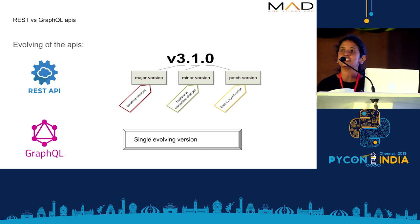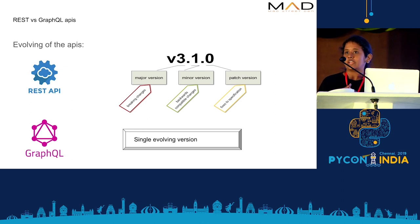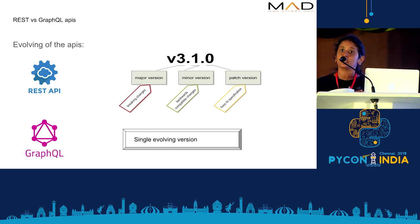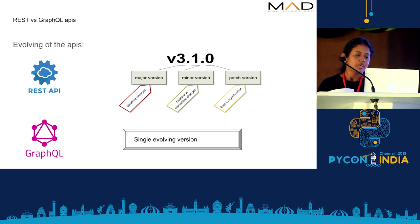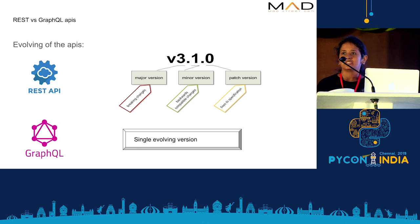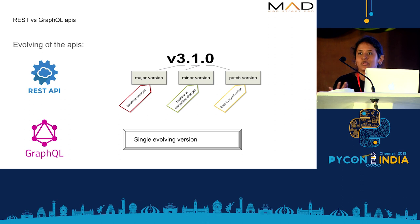With REST APIs, versioning must be maintained stringently — minor versions must have no breaking changes, and when major versions are released clients must use the right version. If the back-end team decides to drop older versions, a lot of communication is needed. With GraphQL, we can add new fields or types to the schema without affecting any client queries, meaning we can maintain a single evolving version. The client doesn't need to make changes to keep pace with server changes — they still control what data they receive.